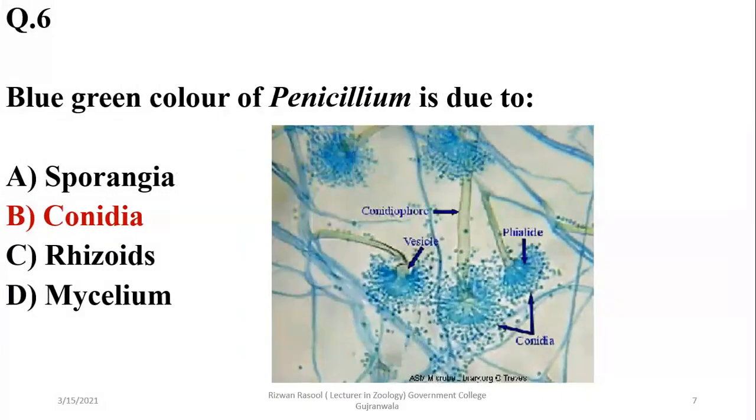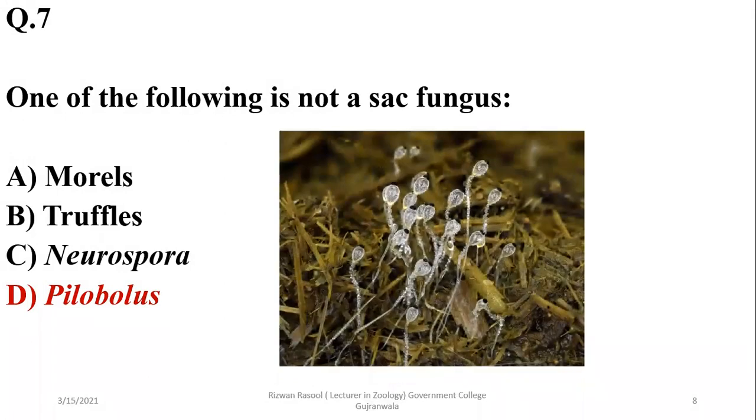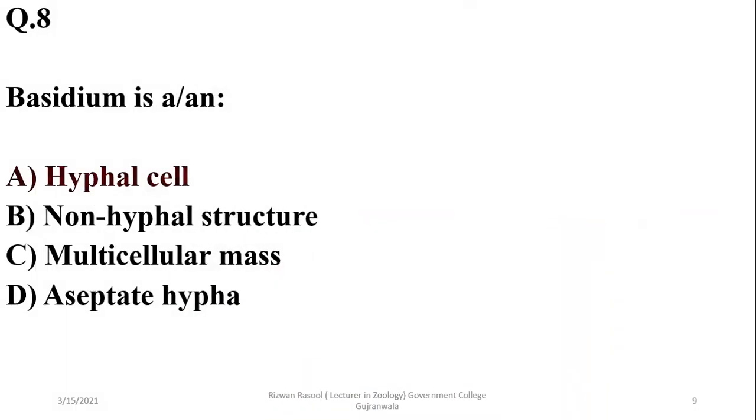Number seven: One of the following is not a sac fungus. It is Pilobolus, which is known as a puffball or spitting fungus, and it's not a sac fungus or ascomycete. They belong to zygomycetes. Number eight: Basidium is a hyphal cell, so the right option is A.